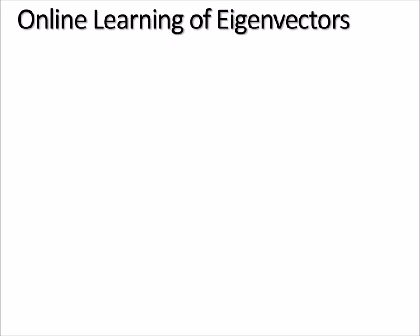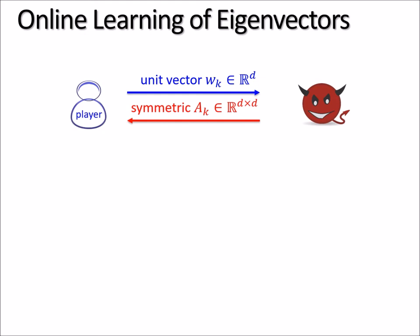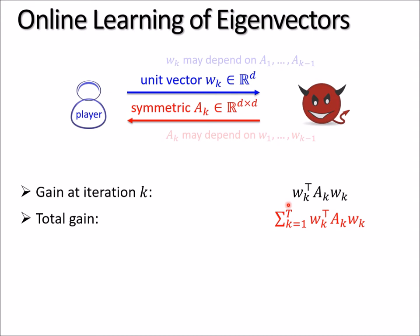Online learning of eigenvectors. This is a game between a player and an adversary. It's an online game. In each iteration k, the player and adversary simultaneously choose actions. The player chooses a unit vector w_k in d-dimensional space, and the adversary chooses a symmetric matrix A_k that is d by d. The player's strategy can depend on past iterations as well as the adversary. The gain of the player at iteration k is the following quadratic form, w^T A_k w. The total gain of the player is the summation of the gain over all iterations, say T iterations.